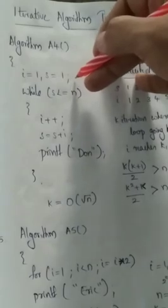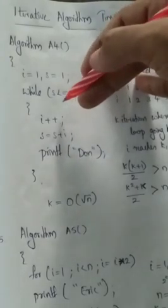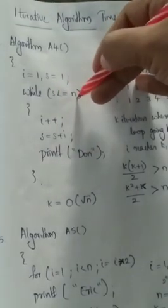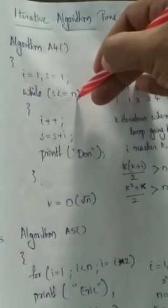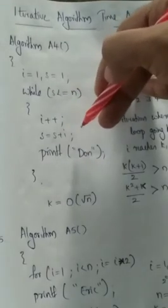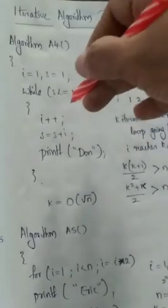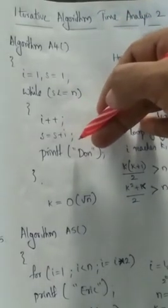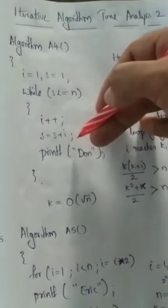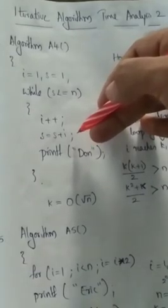We are going to declare a while statement. While statement we are going to use. The while statement is the third variable. We will stop the algorithm, then we will execute the algorithm. The algorithm will be executed. That is the complicated algorithm.